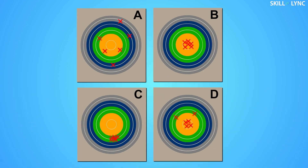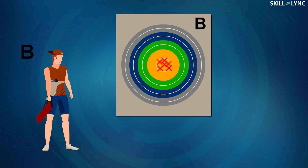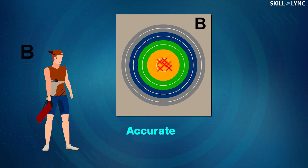The four targets of the four participants can be used to explain the difference between precision and accuracy. A has no experience whatsoever, and because of this none of his shots managed to hit the bullseye, which means A was neither accurate nor precise. But this was not the case with B. B was an expert archer, so he managed to get all his shots to hit the bullseye. This means B was extremely accurate, and also precise because the distance between all the shots was very small.